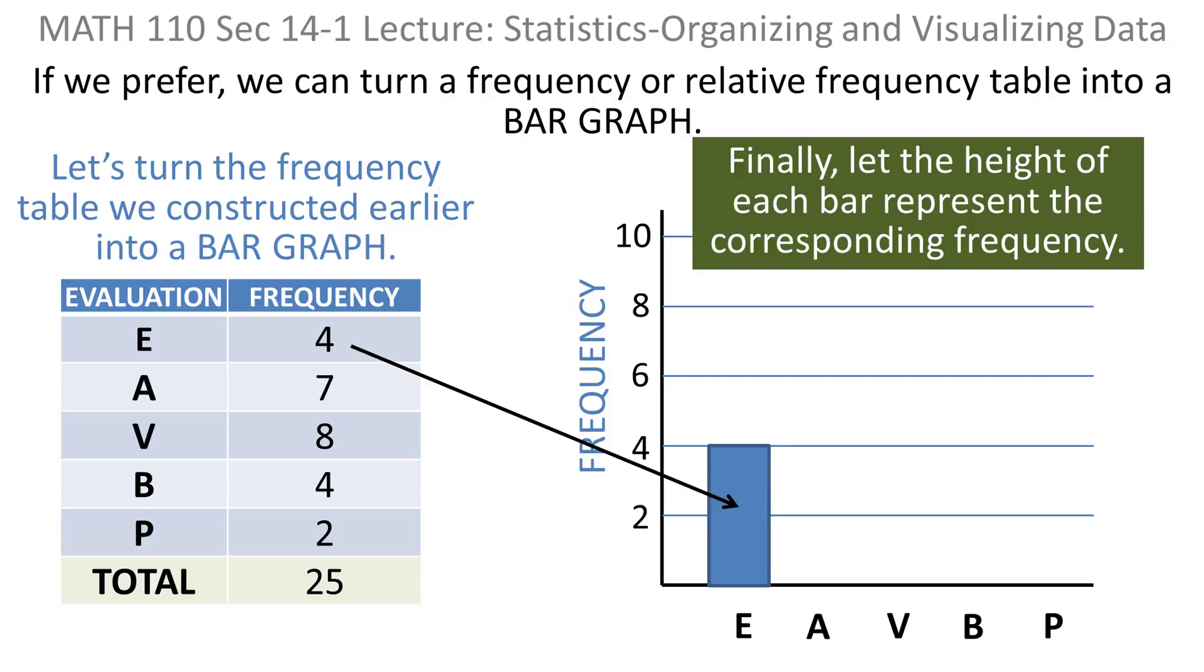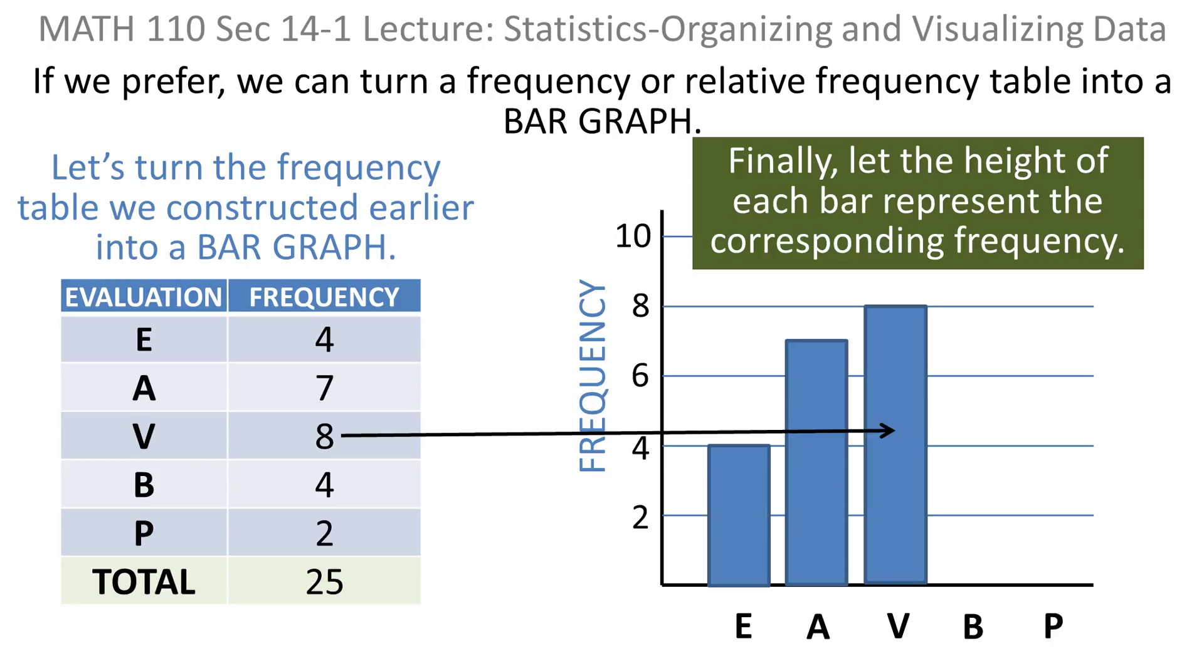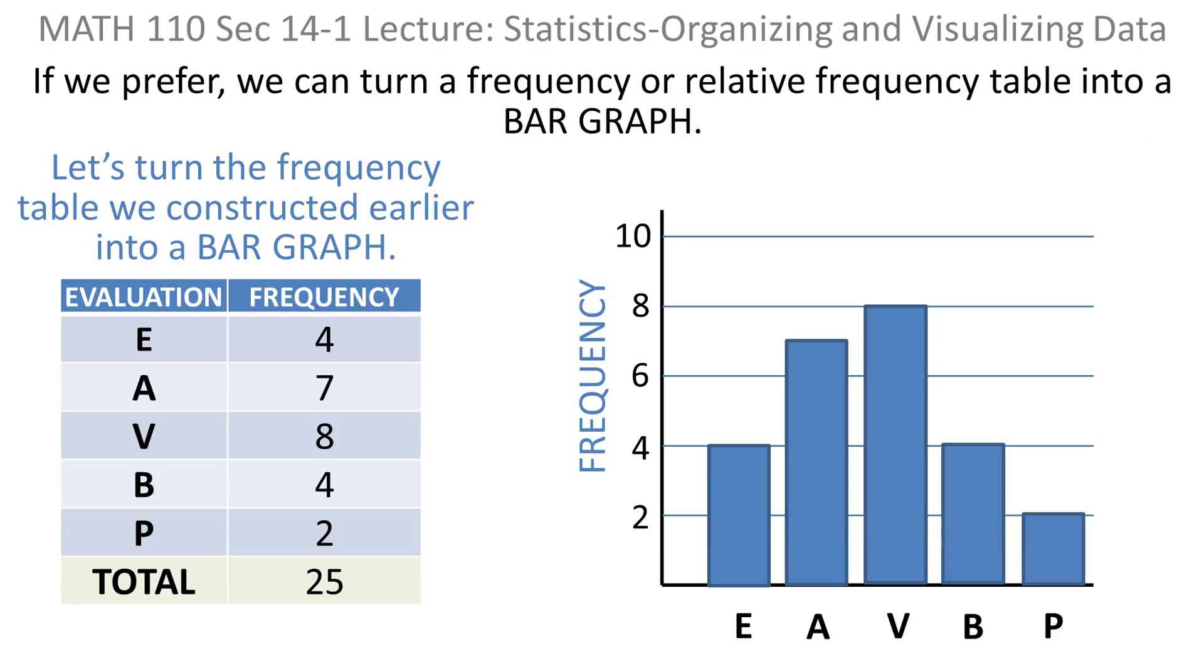E has a frequency of 4, so the bar height for E would be 4. A has a frequency of 7, so its bar height would be 7. V has a frequency of 8, so its bar height would be 8. B has a frequency of 4, so its bar height would be 4. And finally, P has a frequency of 2, so its bar height would be 2. Now you've taken a frequency table and turned it into a bar graph, just another way of looking at it.